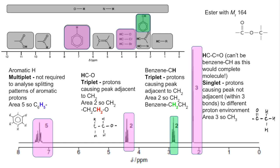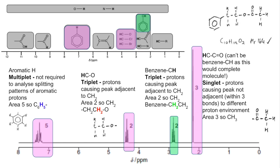Putting it all together, the structure of the ester looks like this. The five benzene hydrogens correspond to the aromatic peak. The two CH2 protons adjacent to the benzene ring are the green peak. The CH2 bonded to oxygen is the next peak. And the isolated CH3 group on the other side of the ester bond gives the singlet. As a final check, the molecular formula comes out as C10H12O2, giving an MR of 164 — which confirms the structure.